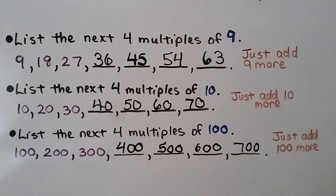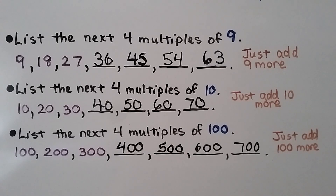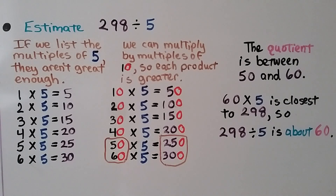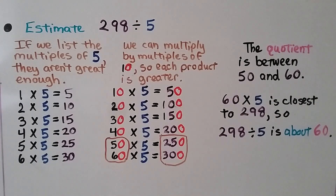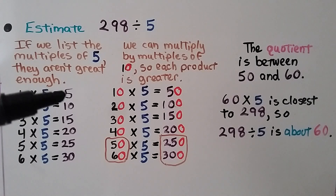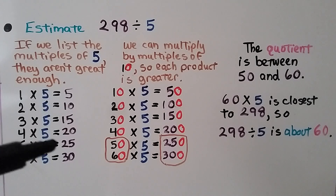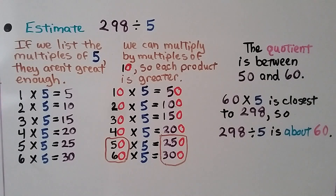And we can find the next multiple by just adding 100 more. We need to estimate 298 divided by 5. If we list the multiples of 5, they aren't great enough: 1 times 5 is 5, 2 times 5 is 10 — we get 5, 10, 15, 20, 25, 30. Those are nowhere near 298, so our list would be very, very long.